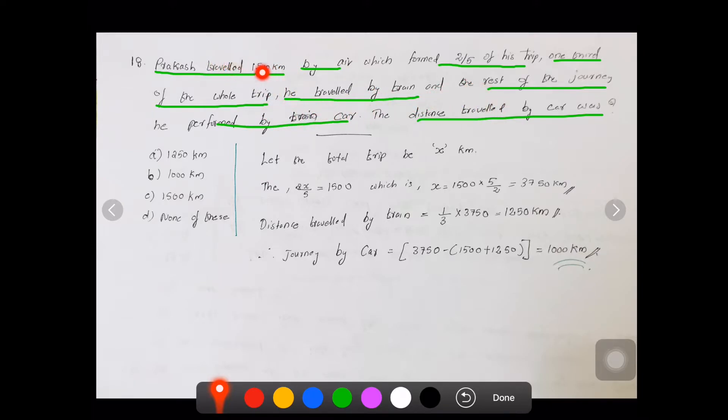He travelled by air, then train, then car, so we have to find the distance travelled by the car. Let the total trip distance be x km.